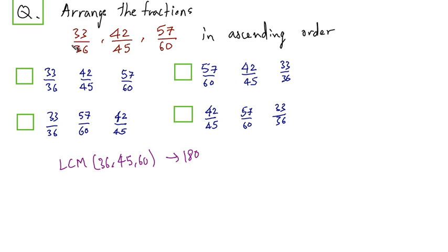Now we have to convert these fractions to an equivalent fraction with 180 as the denominator. So 33 by 36 multiplied by something equals something upon 180. We multiply 33 by 36 by 5 by 5. 36 into 5 is 180. Therefore 33 into 5 gives 165.